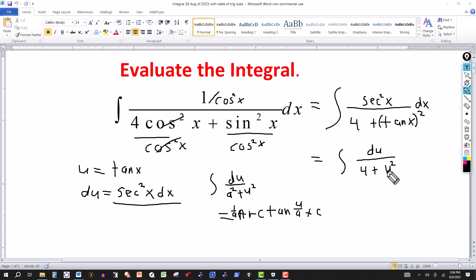So in our case u is tangent x. And you can see a squared is 4. So a is 2.